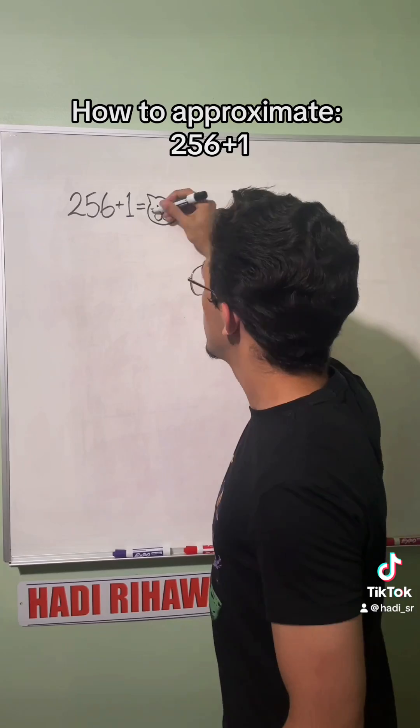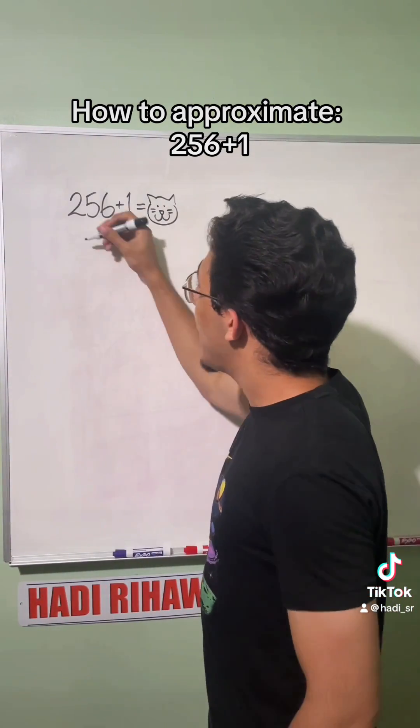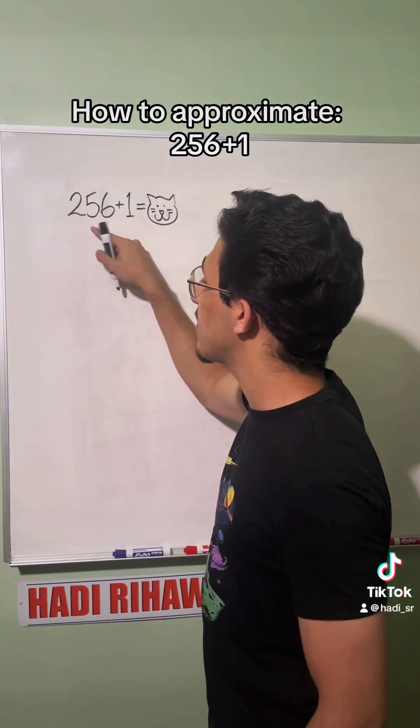I usually go for cat. You could be boring and pick like x or something, doesn't matter. All right, then I'm going to factor out a 256 from both of these using distributive property.